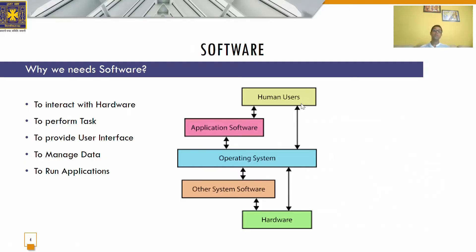Another reason we need software is to provide a user interface. To perform a task, we can design software in such a way that it can be operated by a normal user — for that, we don't need to know the complex programs. Another reason is to manage data. By using software, we can manage data — meaning inserting various data and information, rearranging them, editing them, and manipulating them. Whatever we want to do with the data, we can do it using software.